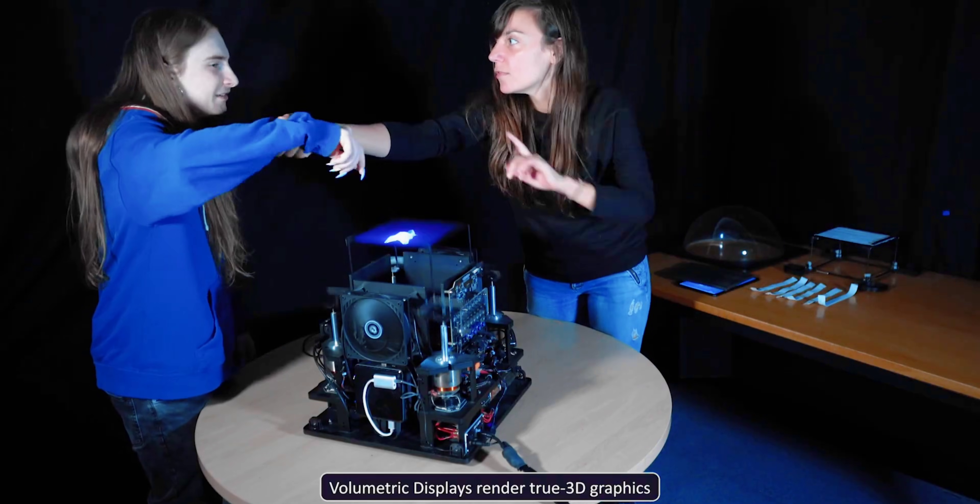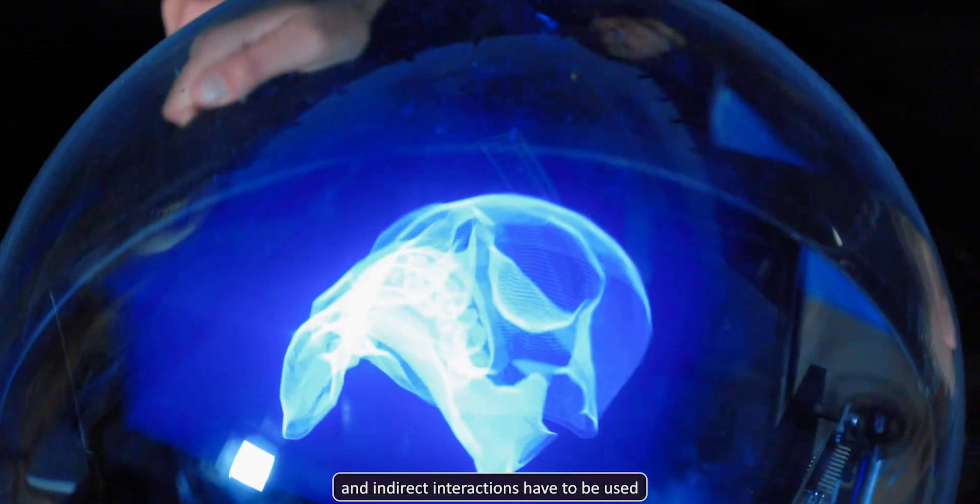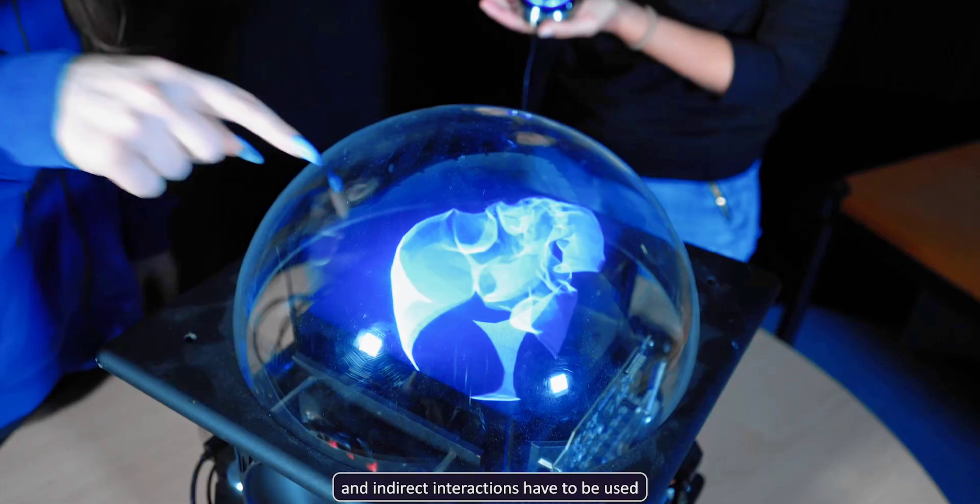FlexEvol builds on the principle of swept volumetric displays, which project 2D slices onto a moving diffuser to form a 3D image. These images are created through persistence of vision.